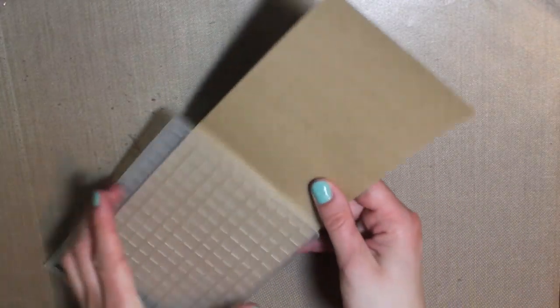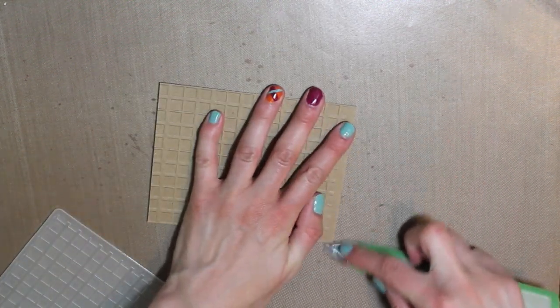Once I got that embossed, I can just take it right out. And it's this awesome plaid background that we're going to have. And I'm just going to score that one more time to make sure that it's really scored.